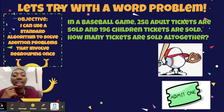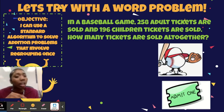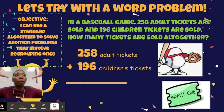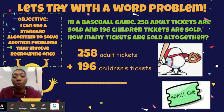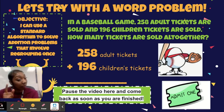In a baseball game, there are two hundred fifty-eight adult tickets and one hundred ninety-six children's tickets sold. How many tickets are sold altogether? First, find the numbers: two hundred fifty-eight plus one hundred ninety-six. The phrase 'all together' means we want the total — so we add. Pause the video, solve two hundred fifty-eight plus one hundred ninety-six, and come back. Miss Dennis will reveal the answer when you continue playing.